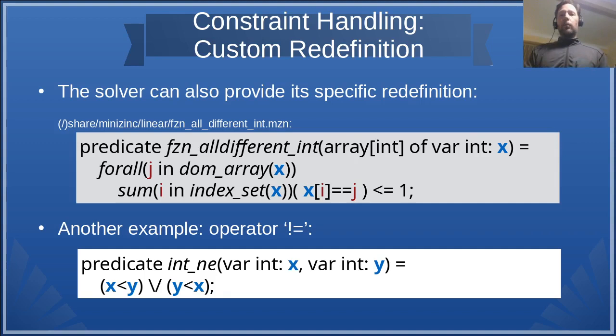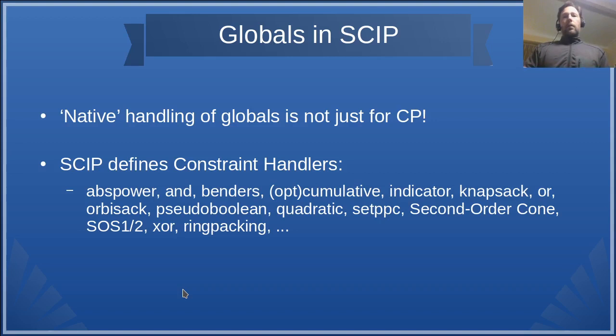The third way to provide a custom redefinition. In this case is for MIP. So we want to recreate the tight formulation from the example. And another example unrelated is how we can redefine disequality. It's just a disjunction of those two guys.